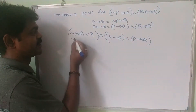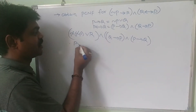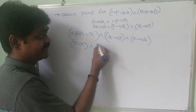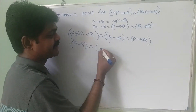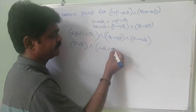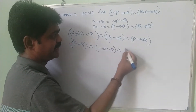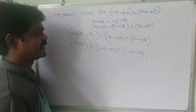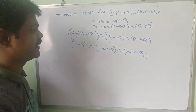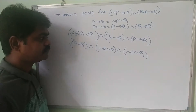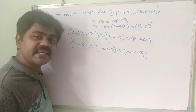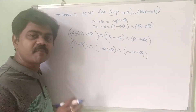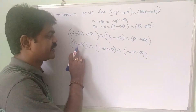Negation of negation cancels, giving us p or r. Then q implies p can be written as negation q or p, and p implies q can be written as negation p or q. So now if you see, it is in the form of a product of sums — this is sum 1, sum 2, and sum 3, and these are the product.